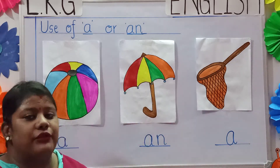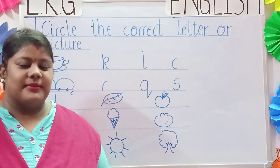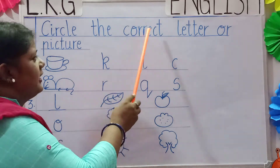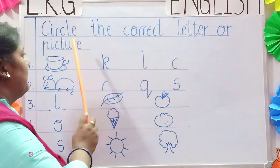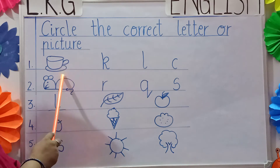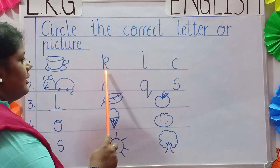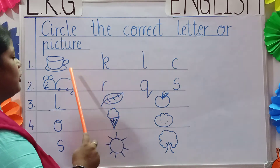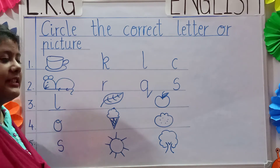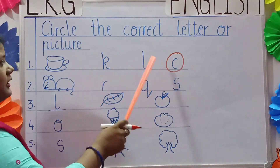Like this children, you will practice with the other letters also. Our second topic is: circle the correct letter or picture. Now see children, number 1 — it is a picture of a cup, and K, L, C — three letters are given. You have to circle the correct letter, so we will circle the letter C — C for cup.